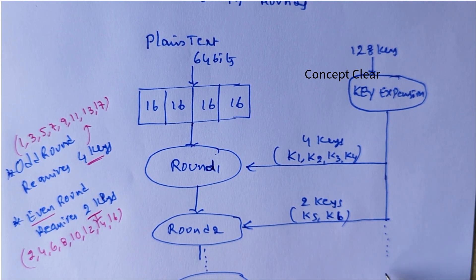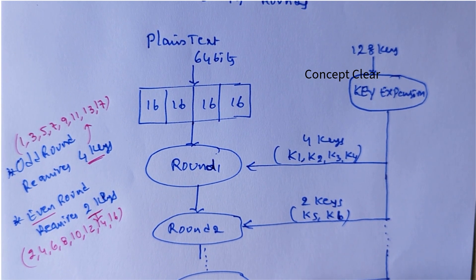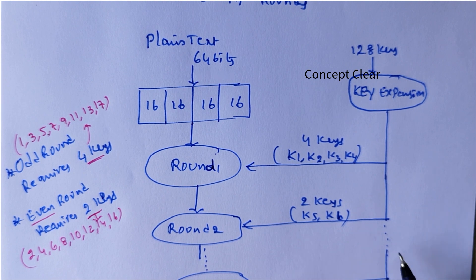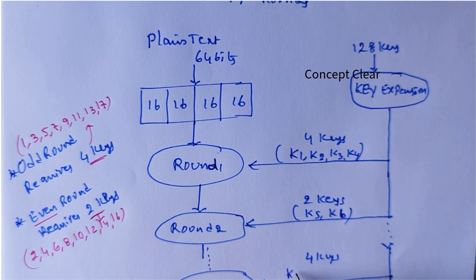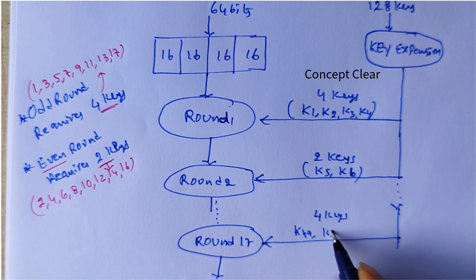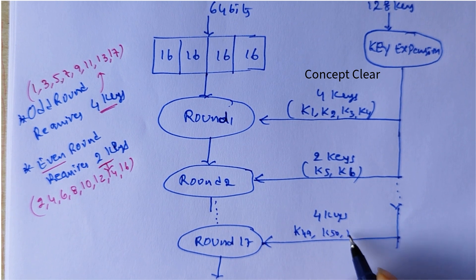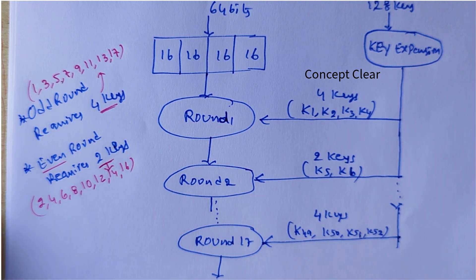Performing like this up to the 17th round: in the 17th round, 4 keys are used. The last 4 keys are K49, K50, K51, K52, and these 4 keys are used for round 17.